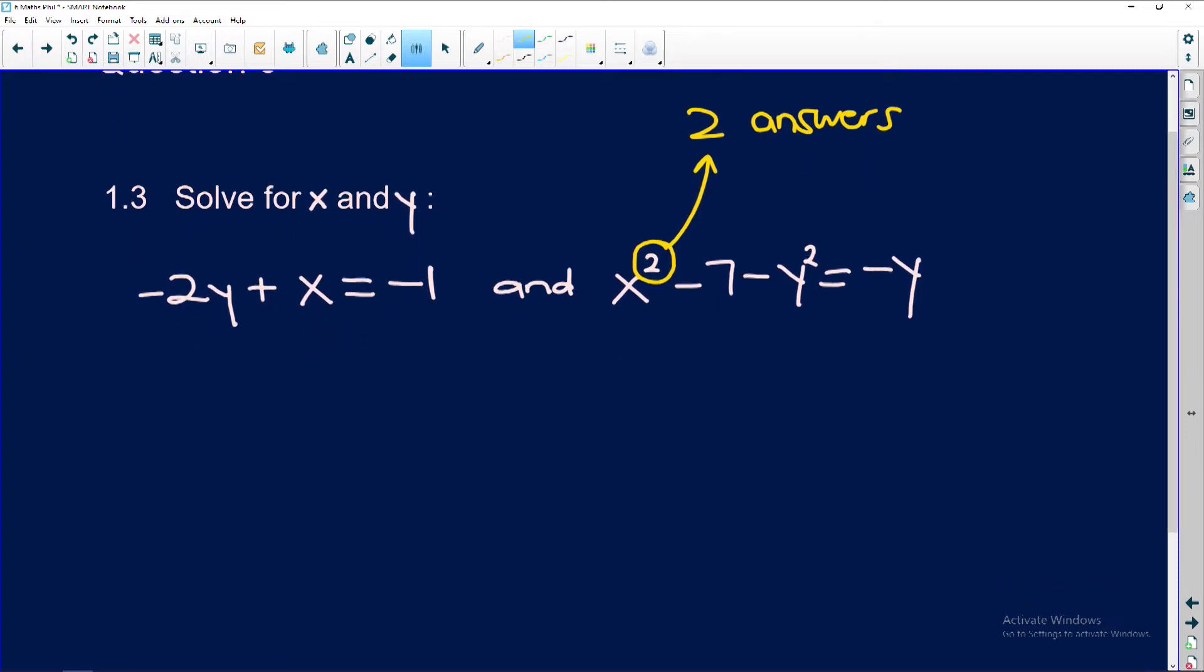So my inclination is to get the first equation in terms of x because then I can substitute in. So if I rewrite this equation in terms of x, I'm going to get x is equal to negative 1 plus 2y if I add 2y to both sides.